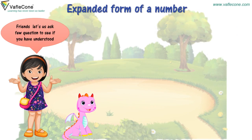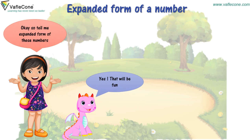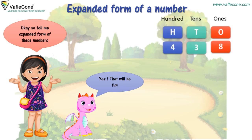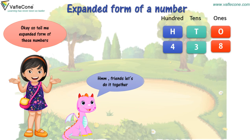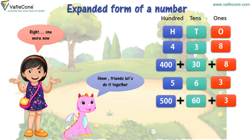Let us ask a few questions to see if you have understood. That will be fun. So tell me the expanded form of these numbers. 438. Friends, let's do it together: 400 plus 30 plus 8. One more now. 500 plus 60 plus 3.